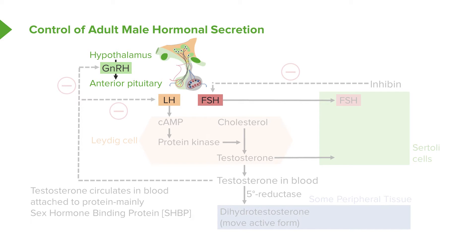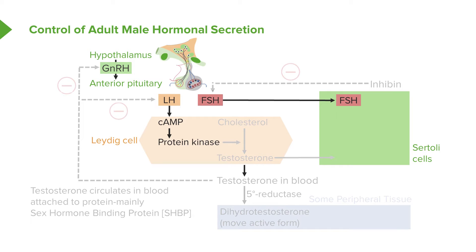LH travels through circulation down to the testes, where it is bound to LH receptors. It then works through cyclic AMP and protein kinase, and will activate a very important enzyme known as desmolase, which converts cholesterol into testosterone.